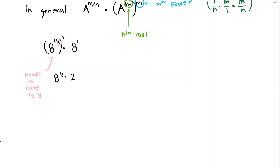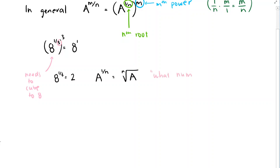In general, taking a to the 1/n power — in this case it was 1/3 and we had to take the cube root — this meant taking the nth root of a. This is asking us: what number raised to the nth power results in the number a? So that's what this 1/n power means — it's really just the nth root.